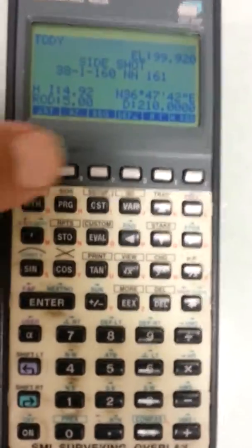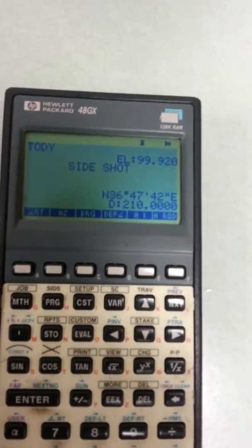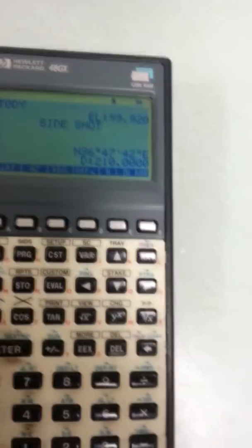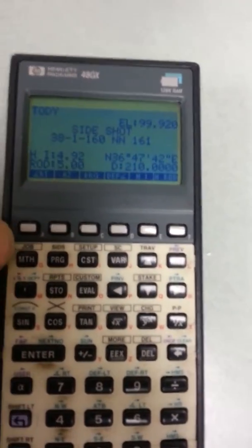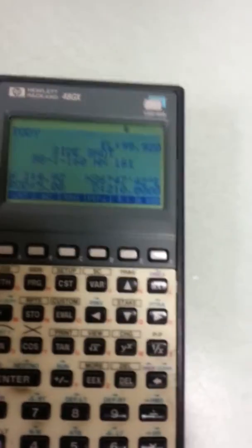Again, if you want to do a side shot, side shot, okay, shows your elevation, your side shot to northern east things. So if you want to do horizontal right or azimuth, you can do that here. Horizontal right and go right, let's see, 175, enter.